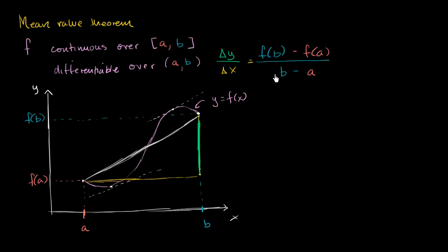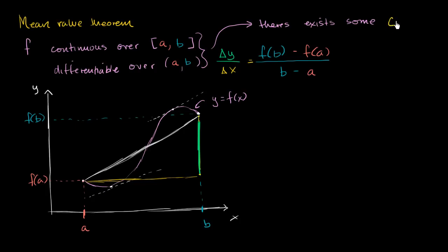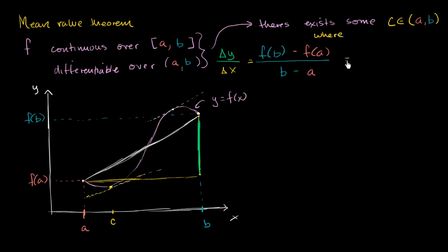And the mean value theorem tells us that there exists some x value in between a and b. So in the open interval between a and b, there exists some c — a member of the open interval between a and b, where a is less than c which is less than b — where the instantaneous rate of change at that x value is the same as the average rate of change. There exists some c in this open interval where the average rate of change equals the instantaneous rate of change at that point.